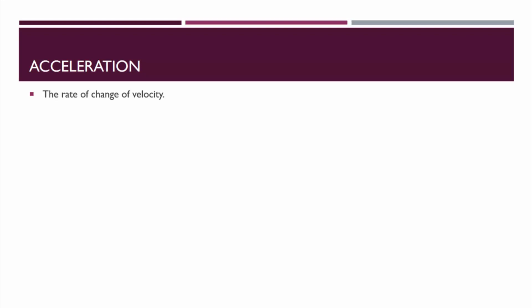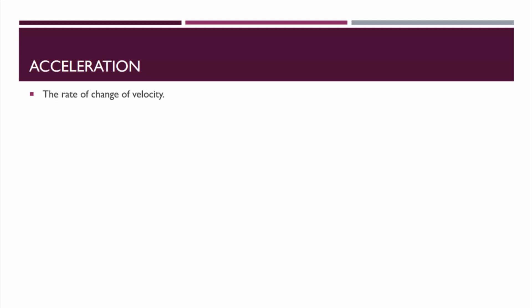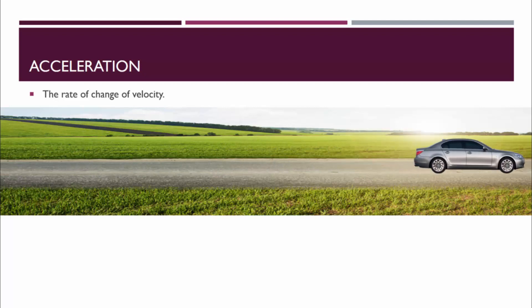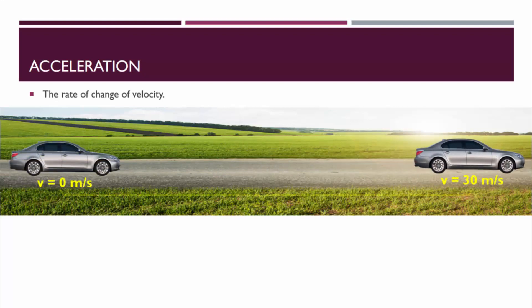Acceleration is the rate of change of velocity. Here's an example. Let's say that the car accelerated from 0 meters per second to 30 meters per second over the course of 5 seconds. We could use the equation a equals delta v over t, plug in our final velocity and our initial velocity and our time, and find that the acceleration of this car was 6 meters per second squared.